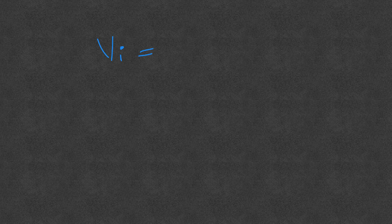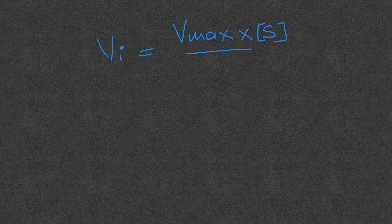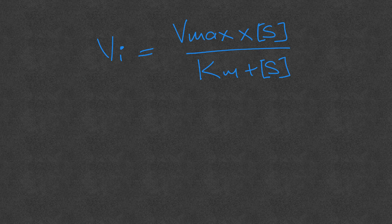Hey everyone, Dr. Mungle here. In my previous video I explained how to calculate the initial velocity of a reaction using the Michaelis-Menten equation, whenever maximum velocity, substrate concentration, and Km are provided. Just to recap, the Michaelis-Menten equation — one mnemonic mentioned in the comments of my previous video is 'Victoria Secret' — just as a mnemonic.